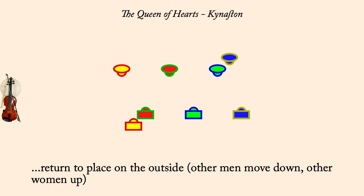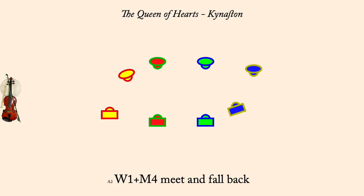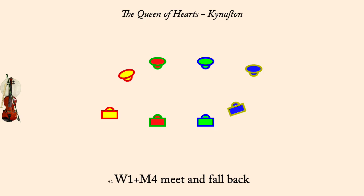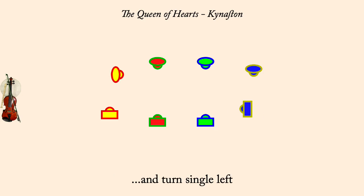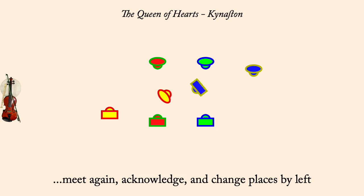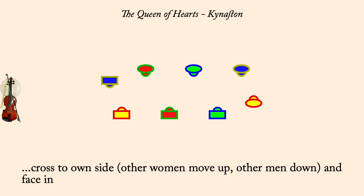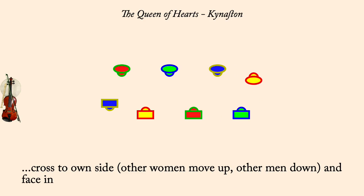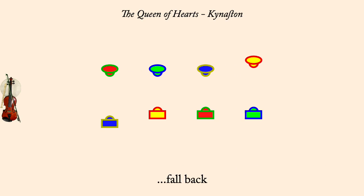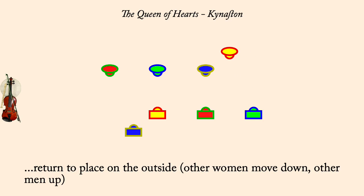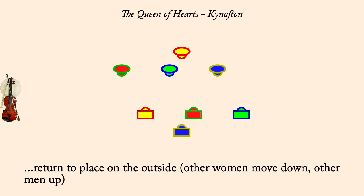Woman one, man four: meet and fall back. And turn single left. Meet again and change by left. Cross to own side, others make room. Fall back. Return to place, others make room.